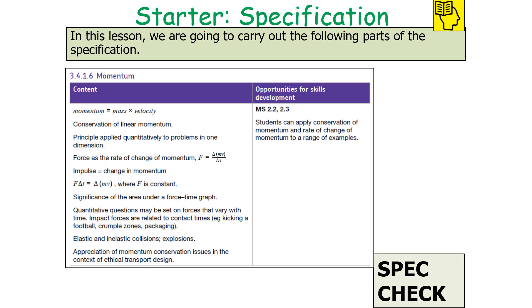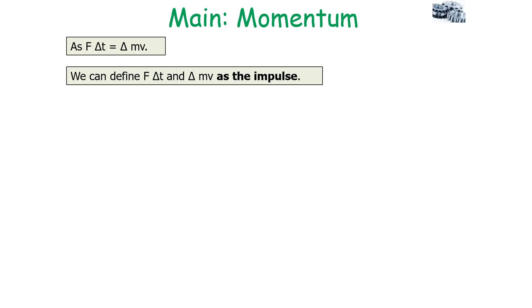In today's lesson, we're going to be looking at the following part of the AQA A-level physics specification, 3.4.1.6 momentum. As we've looked at previously, we have said that F times delta T is equal to delta mv.